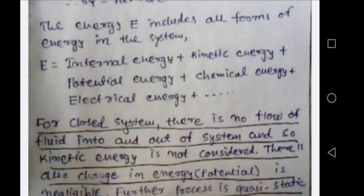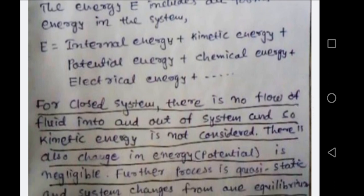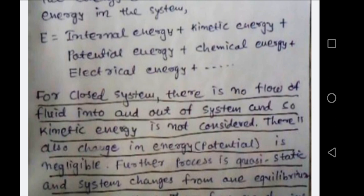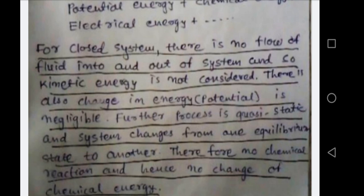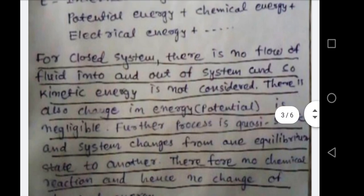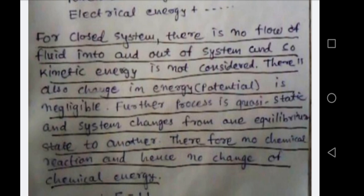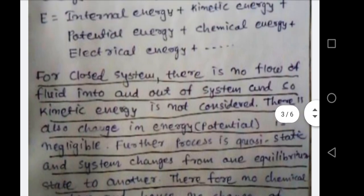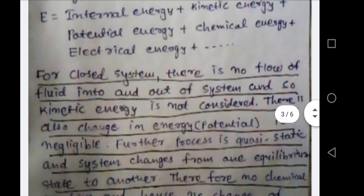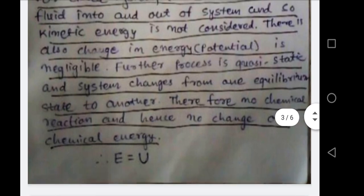Potential energy — energy due to storage of fluid or system at a height — is also zero for the closed system. Chemical energy is zero because there is no chemical process and no change in molecular structure in a closed system. Electrical energy is also considered zero, because it is due to transfer of valence or free electrons, and in a closed system there is no transfer of molecules between system and surroundings. Therefore, energy of the system equals internal energy, denoted by U: E equals U.